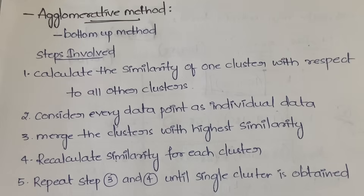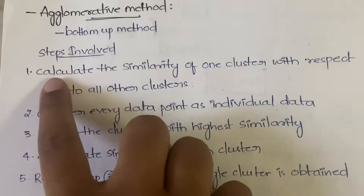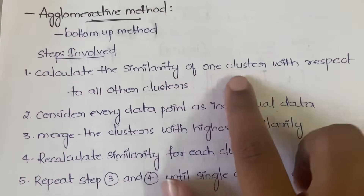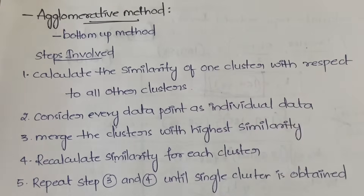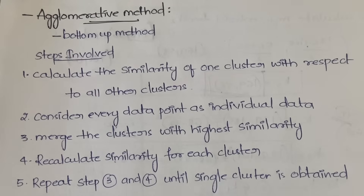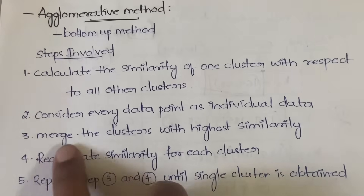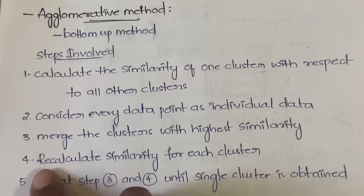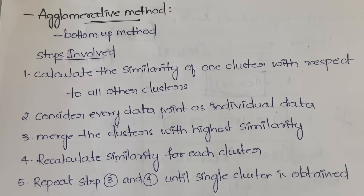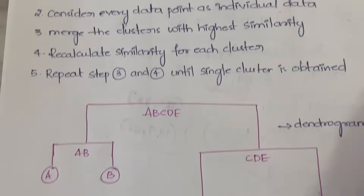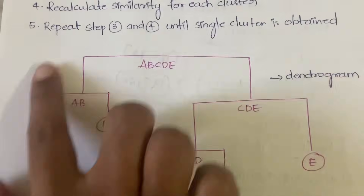Agglomerative is a bottom-to-top method — we start merging from the bottom and go to the top. The steps are: first calculate the similarity of one cluster with respect to all other clusters. If the similarity is very high, you merge those data items. Consider every data point as an individual cluster initially, merge clusters with the highest similarity, then recalculate similarity, and keep repeating until you get a single cluster.